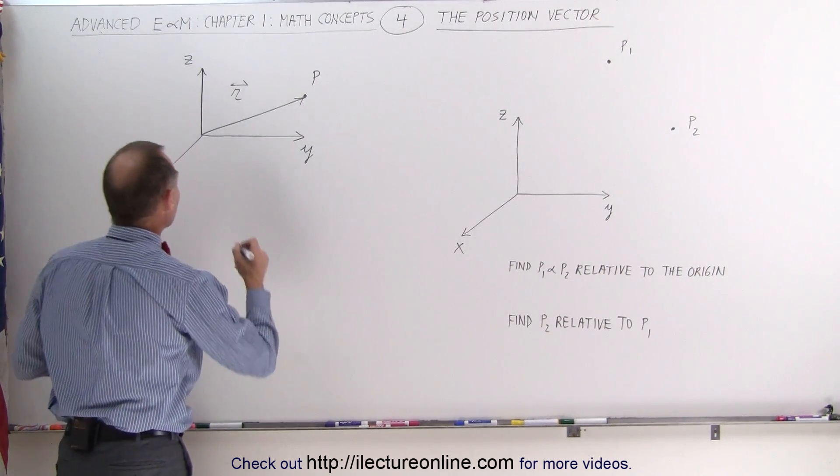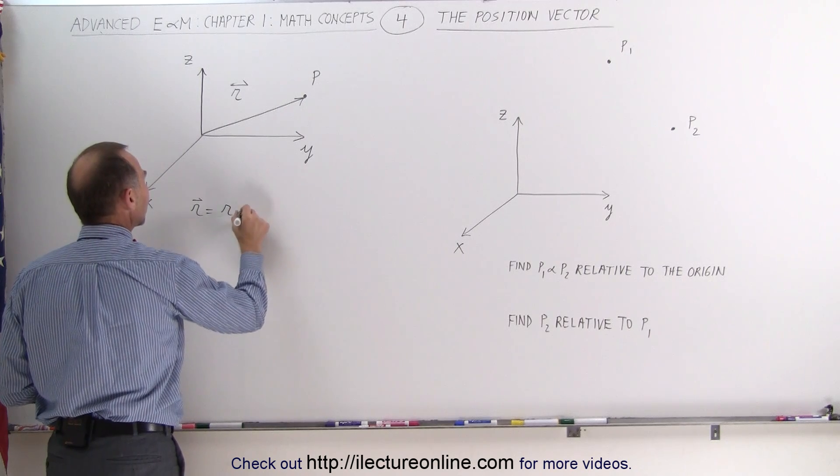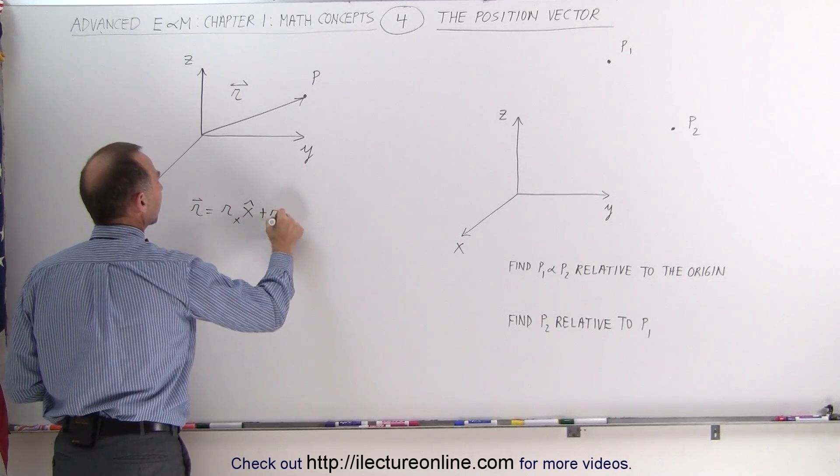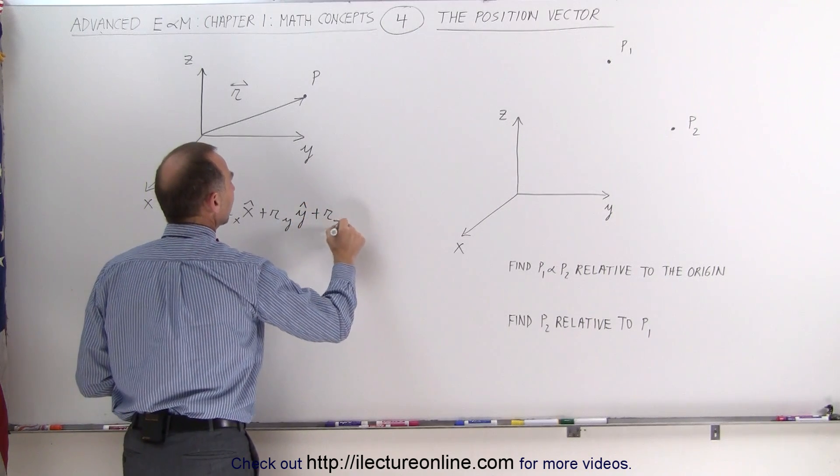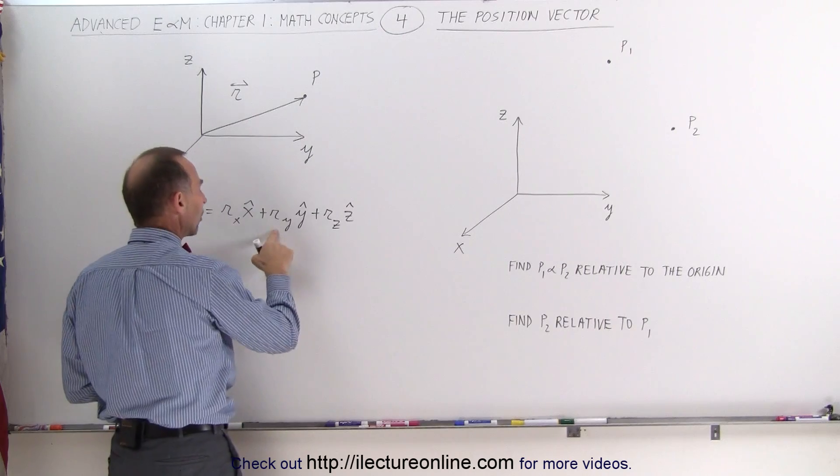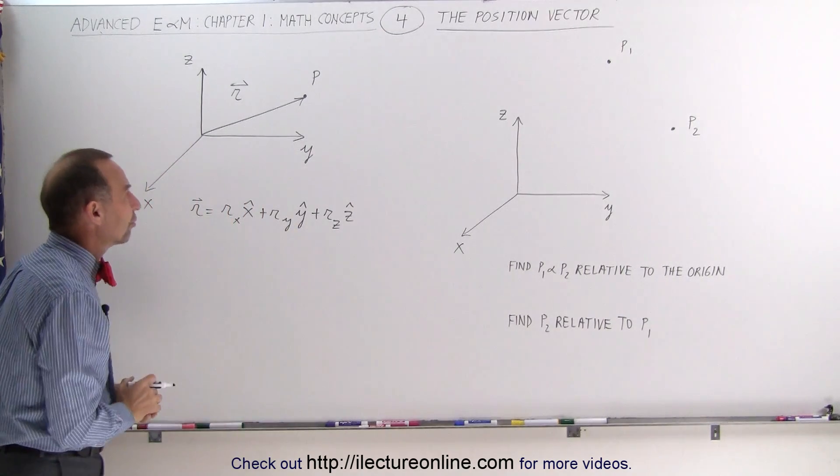We can write this vector as r is equal to the x component of the vector r sub x in the x direction, plus r sub y in the y direction, plus r sub z in the z direction. r sub x, r sub y, and r sub z are the components of the position vector.